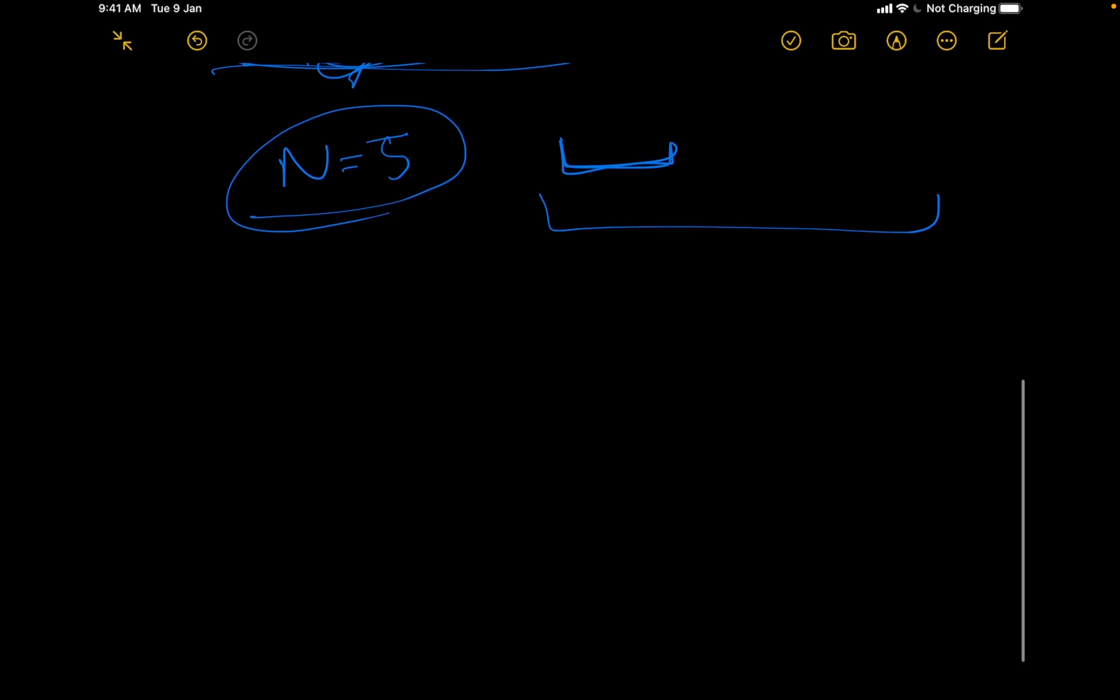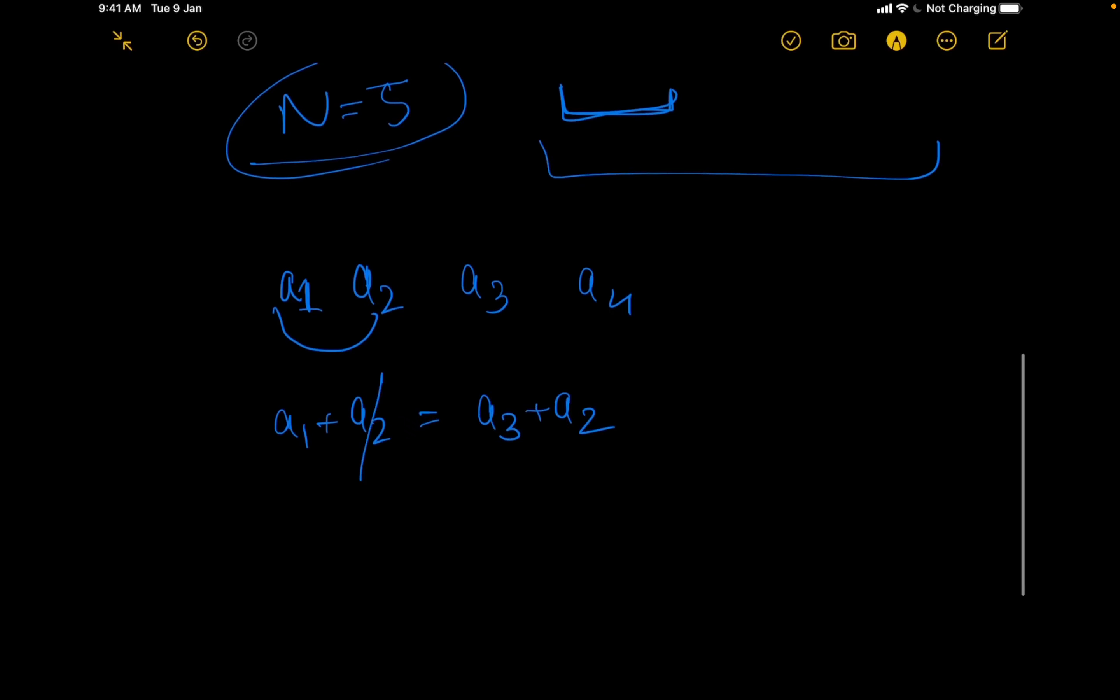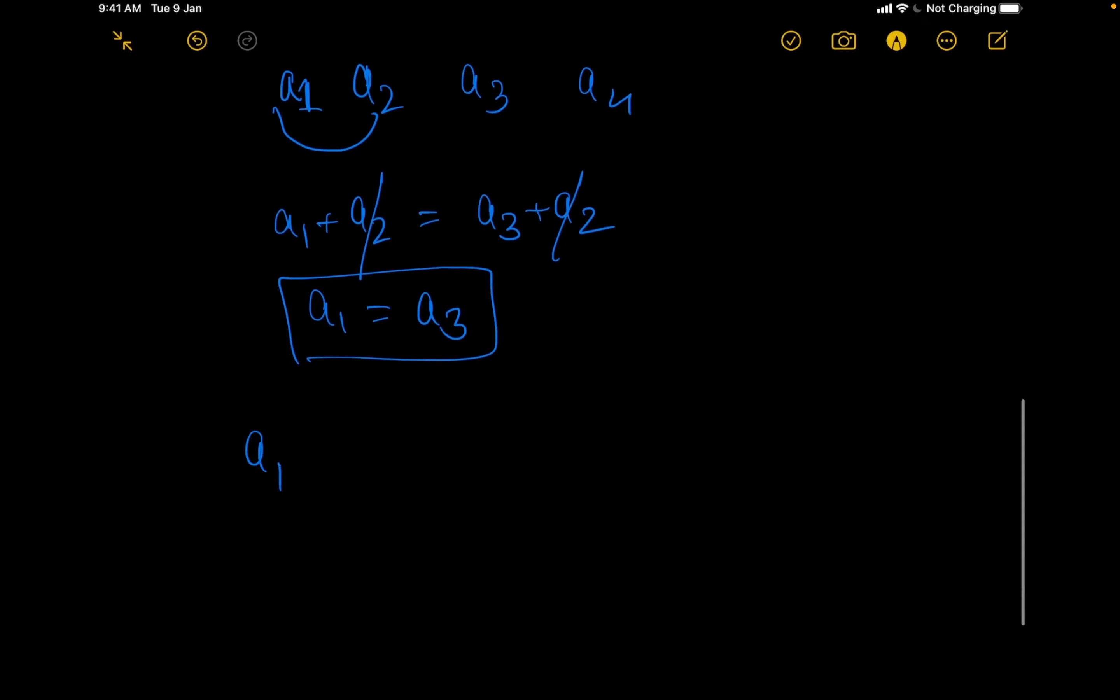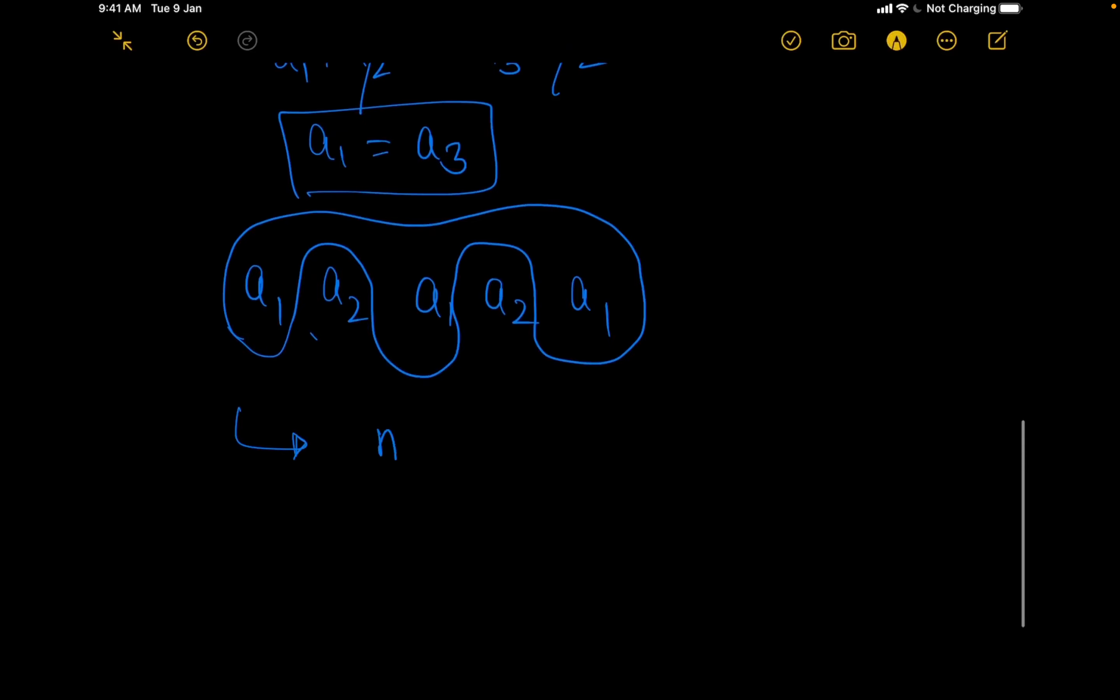We know that a1 plus a2 should be equal to a3 plus a2. From here what we can say is that a2 and a2 would cancel out and a1 equals a3. So the scenario is that there would be a1 over here, a2 over here, then a1, then a2, then a1. This scenario would continue. For odd numbers, what we will have is we will have (n+1)/2 a's and (n-1)/2 b's. This is something we definitely know.